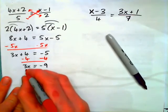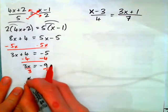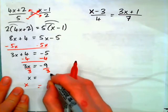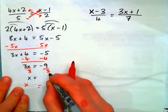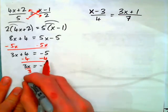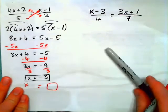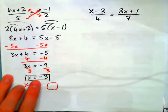So, now get x by itself. Divide both sides by 3 and get x equals negative 9 over 3. That's negative over positive. Negative. 9 over 3 is 3. So, x equals negative 3. And if you check it, it should work.